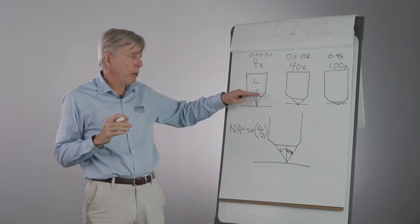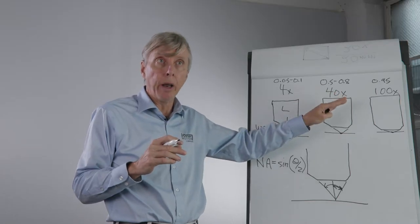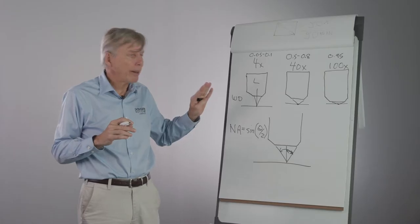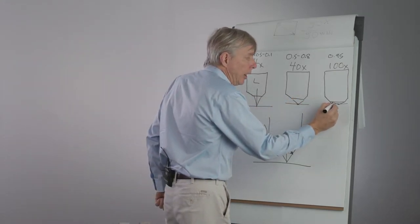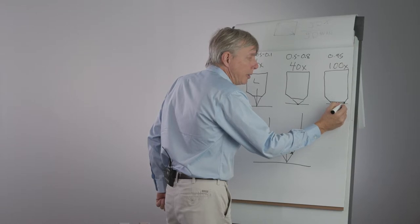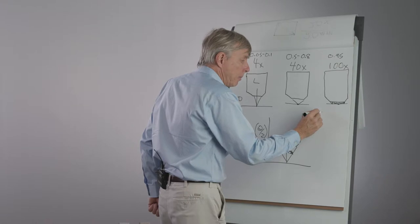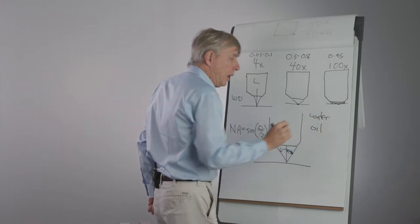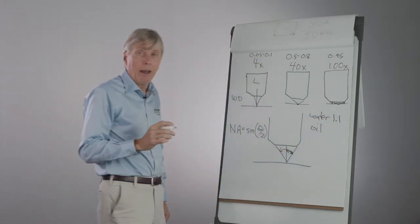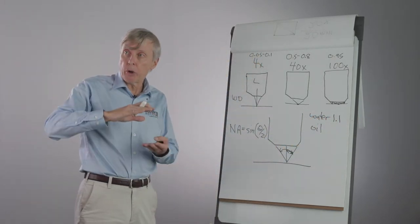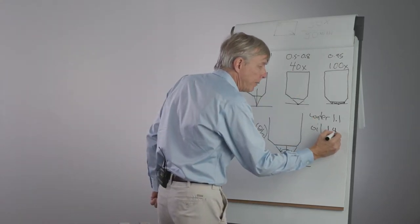As long as there is air between the objective and the sample, you can never get to or exceed 1 for numerical aperture. But there is an interesting twist, and that is you can introduce a liquid in between the cover slip and the objective. And if you do this, you can either use water or oil. With water, you can get up to about a 1.1 numerical aperture. And by the use of oil, this is called oil immersion, you can get the numerical aperture up to as high as 1.47.